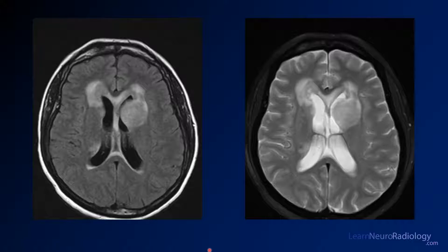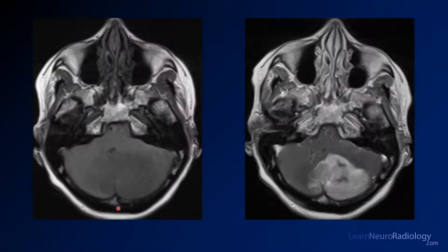Coming up a little bit higher, you'll see additional masses — another mass in the left anterior basal ganglia caudate, probably another mass along the margin of the lateral ventricle, and something in the right thalamus as well. On pre and post contrast, at the level of the cerebellum you see a hypointense area which enhances very avidly on post-contrast imaging — very solid enhancement.